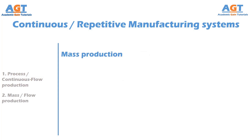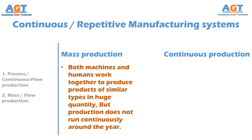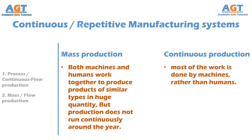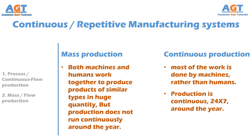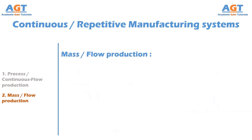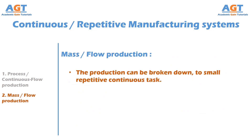There is a lot of confusion between mass production and continuous production. It can be differentiated by the amount of mechanical work involved. In mass production, both machines and humans work together. However, in continuous production, most of the work is done by machines rather than humans, and the production is continuous 24-7, all days in a year. Mass production, also known as flow production or in-line production, is the production system where production can be broken down into small repetitive continuous tasks.